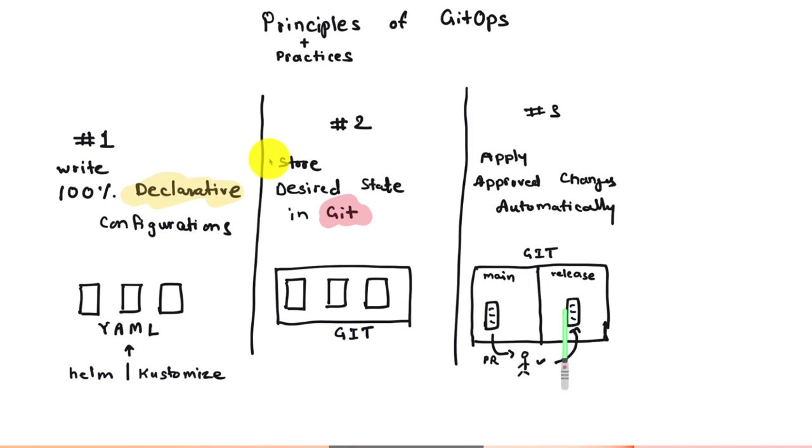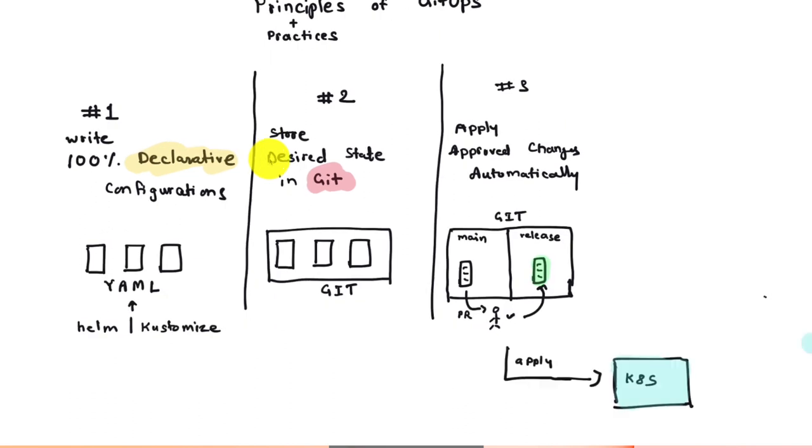And we are talking about the Kubernetes deployment code here. So that could include your deployments, your service configurations, ingress configurations. That could be your stateful sets, your network policies, your quotas, anything that you want to deploy and apply to Kubernetes goes in here. And whatever gets approved gets applied to Kubernetes automatically.